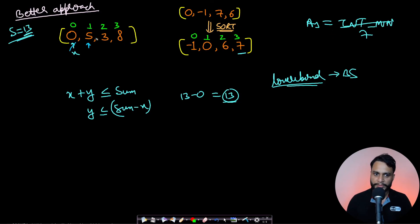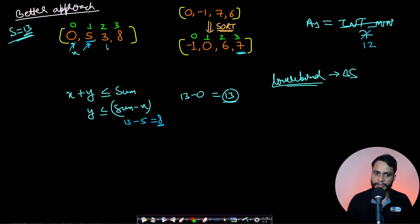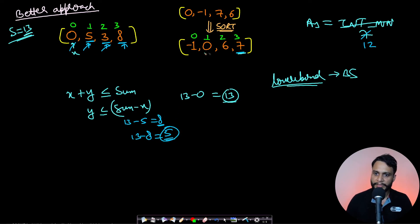Continuing: with x = 5, we search for y ≤ 13 - 5 = 8; binary search returns 7, giving 5 + 7 = 12, which is closer to 13 so the answer updates to 12. With x = 3, we get 3 + 7 = 10, which is farther from 13 than 12, so no update. With x = 8, we search for y ≤ 5, which returns 0, giving 8 + 0 = 8 — also no update. After all iterations, the answer is 12.